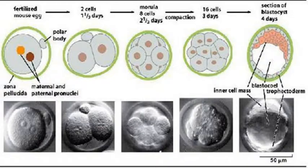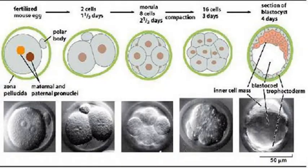Cleavage means simple multiplication. But this multiplication is not as simple as regular cell multiplication — here you are not going to increase the volume. You are going to have the same volume, but you are going to divide your zygote into many, many small cells.